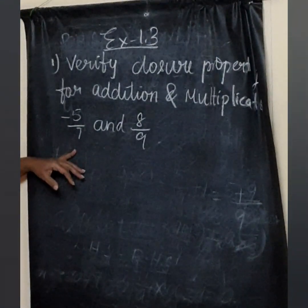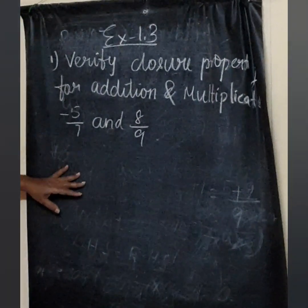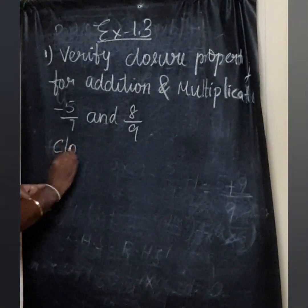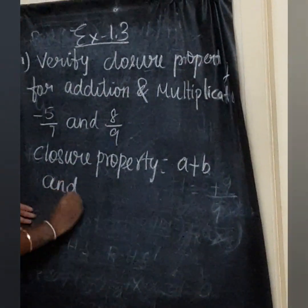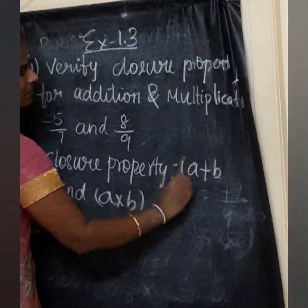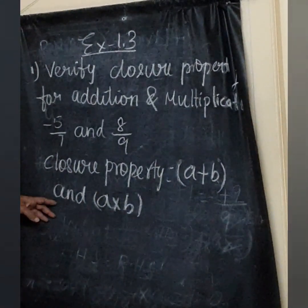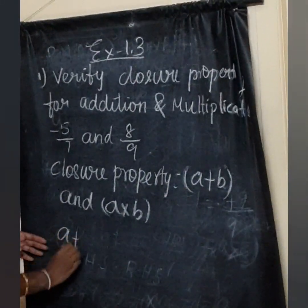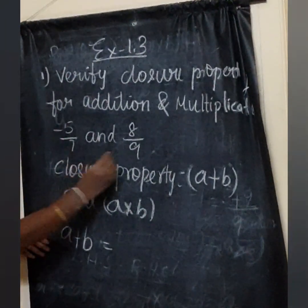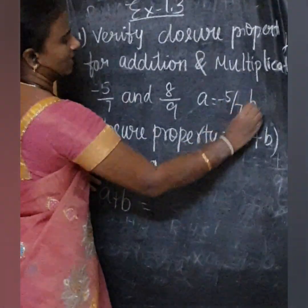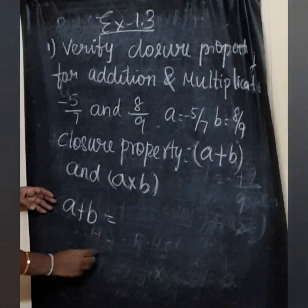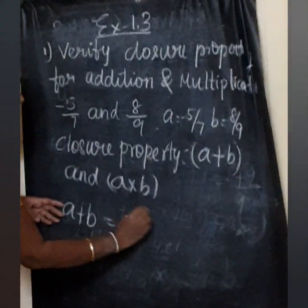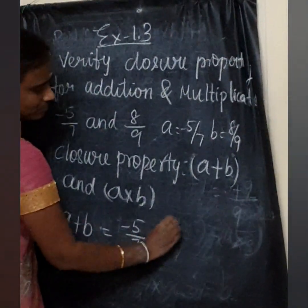Closure property — which we already learned last week — states A plus B and A into B must be rational numbers. Let A equal minus 5 by 7 and B equal 8 by 9. First find A plus B: minus 5 by 7 plus 8 by 9.